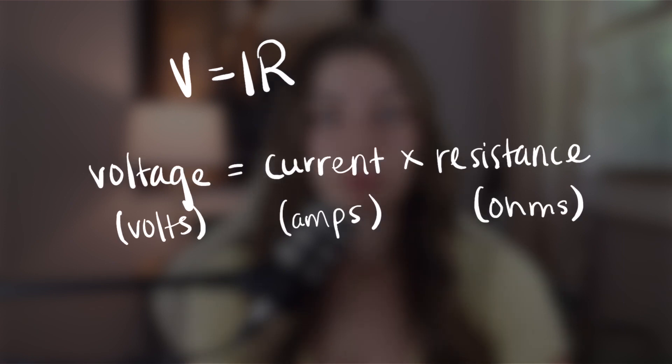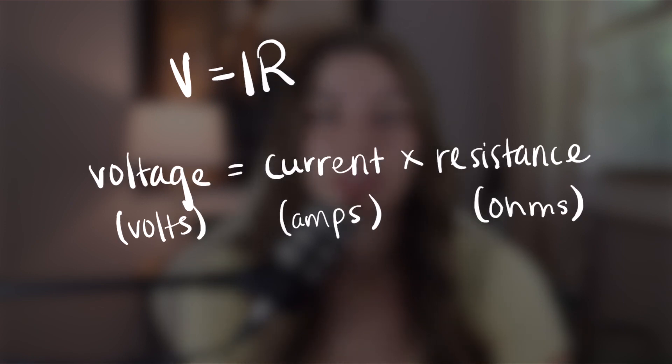The Ohm's Law equation is V equals IR, or voltage equals current times resistance. Voltage is in volts, current is in amps, and resistance is in ohms. That's easy enough, right?